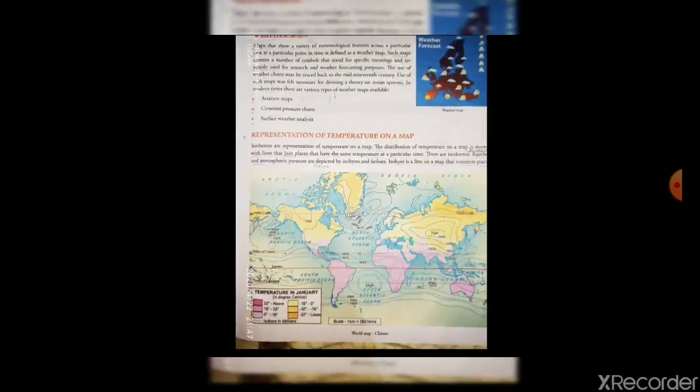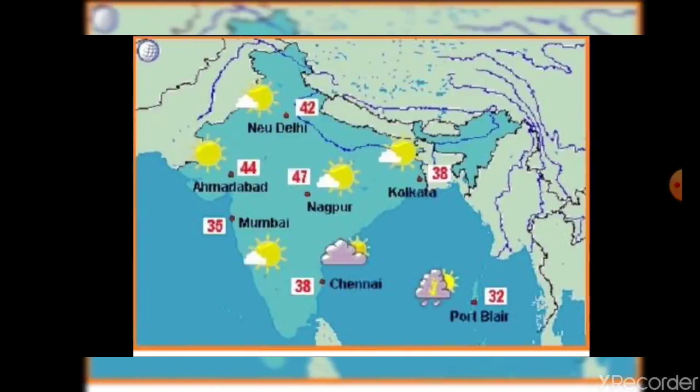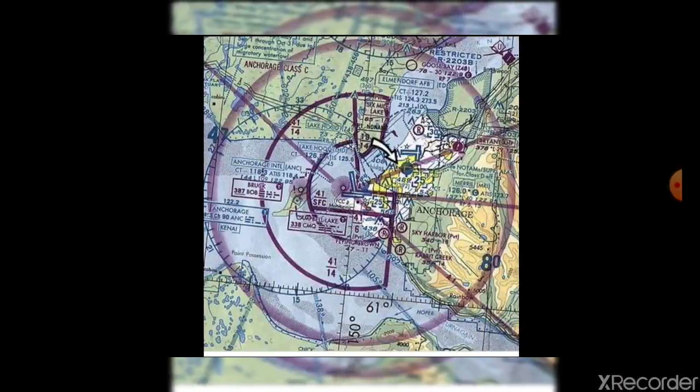Now, let us learn about weather maps. Maps that show a variety of meteorological features across a particular area at a particular point in time are defined as weather maps. Such maps are mainly used for research and weather forecasting purposes. In modern times, there are various types of weather maps available such as aviation maps. This is a weather map showing India's weather condition as we have seen in televisions or in newspapers.